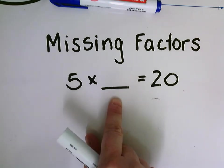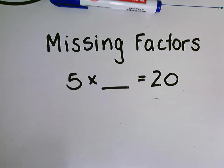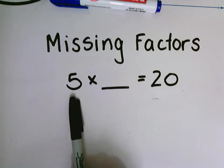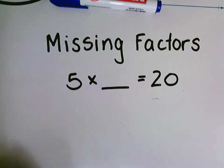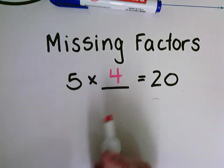I need to think about what I know about my five times tables and think, what number times five is going to give me 20 as a product? If I know it right off the top of my head, I can come up with the answer, or I might need to count by fives till I get to 20 to find out what my answer would be. Five times four equals 20.